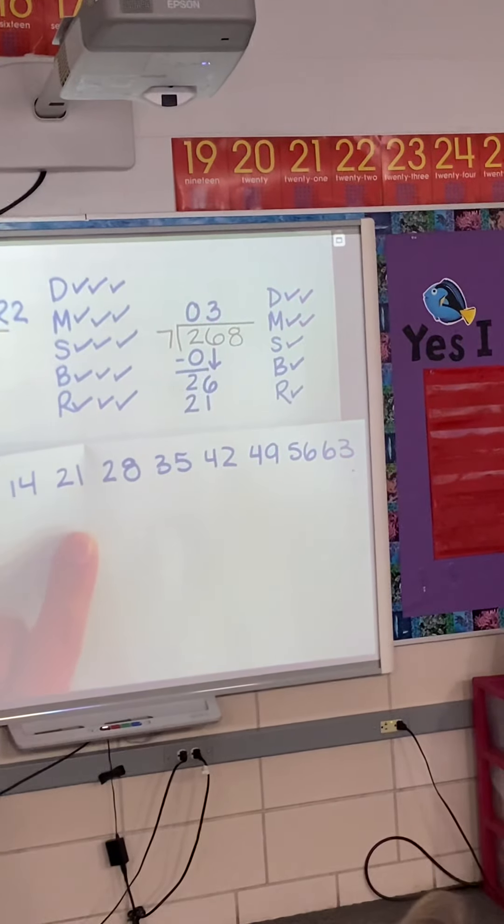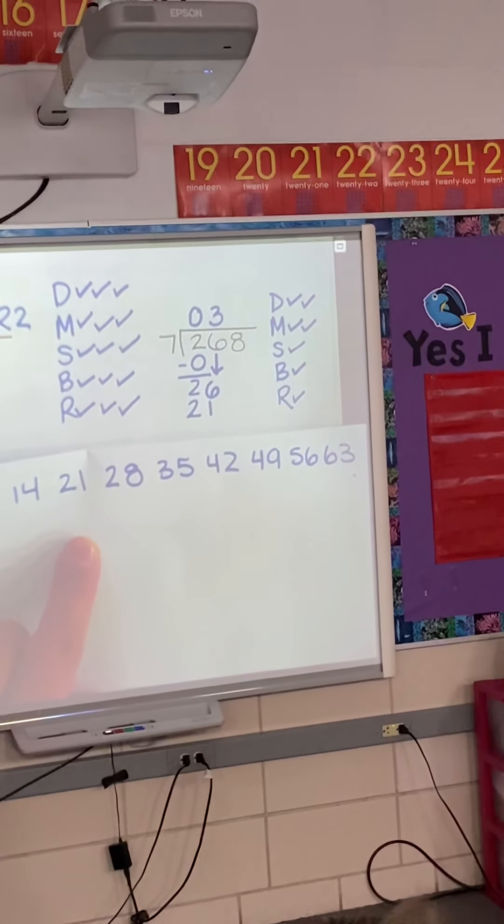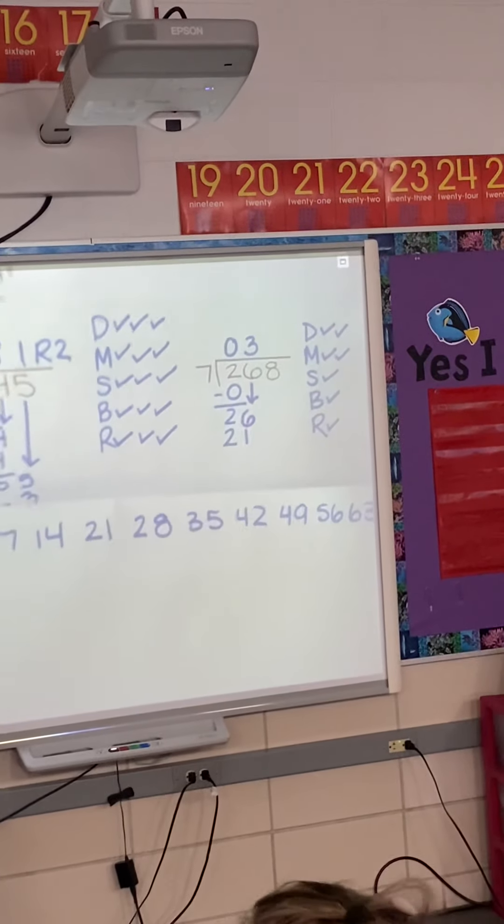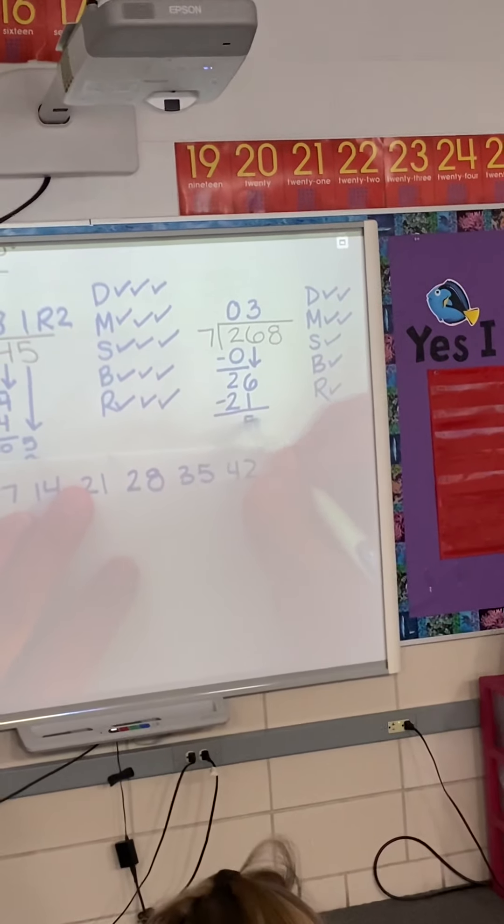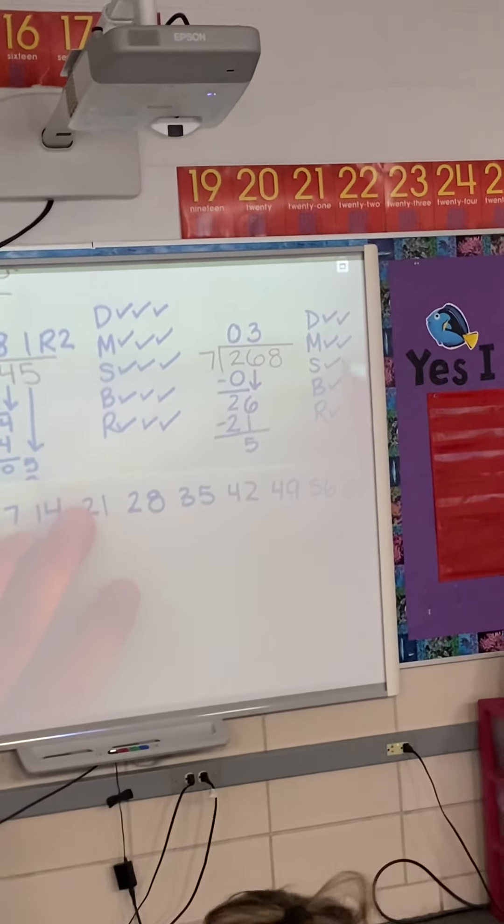Who can tell me what's coming next? McKenna? You subtract 26 and 21. Totally. What do I get? Five. Totally. 26 minus 21 gets me five.